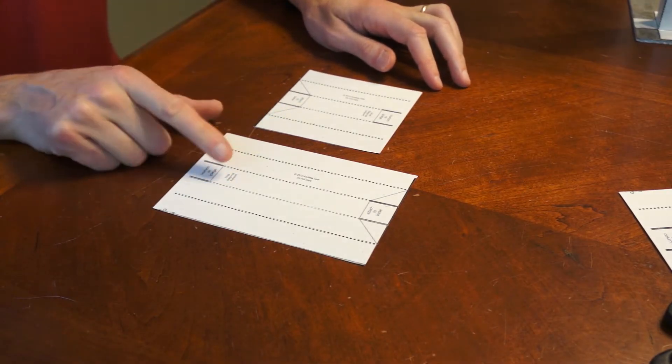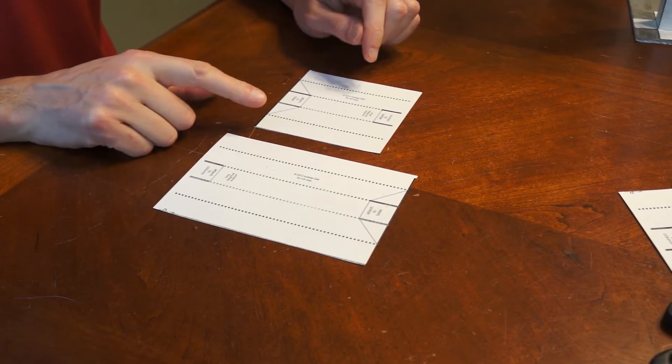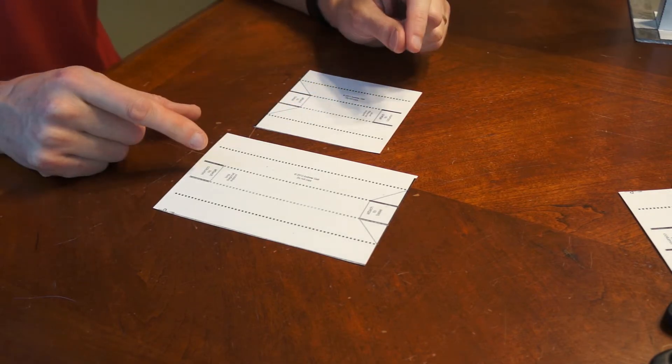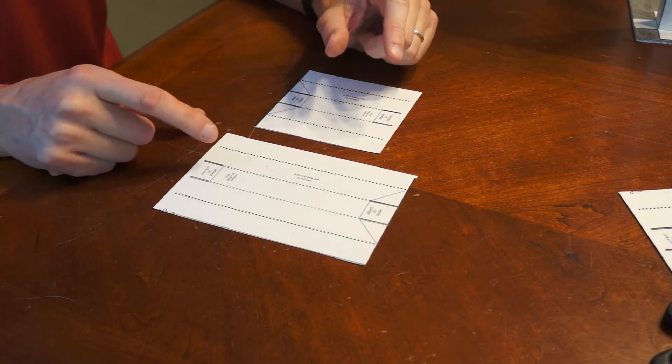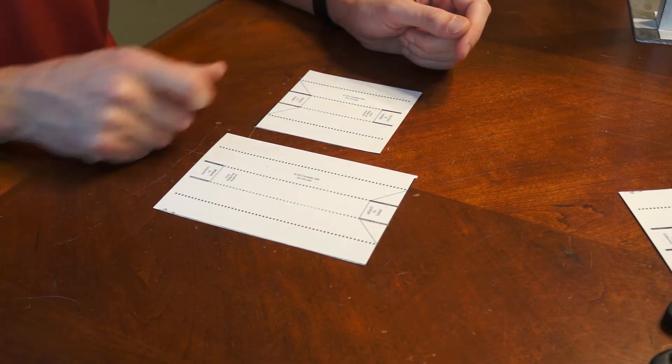The only difference between the two of these and when you would use one versus the other is whether you have room for a long diagonal support or whether it will get in the way of another one and you would want to use a short one instead.